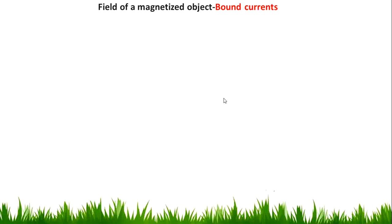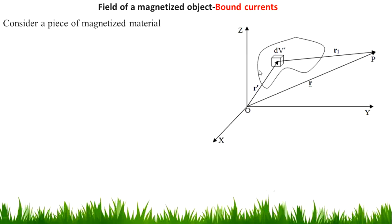As the name states, bound current means something which is bounded — bounded means that the current is bounded to a material. Basically this bound current is related to the magnetic material. Consider a piece of magnetized material, that means we have a material that is magnetized by the help of some magnetic field.